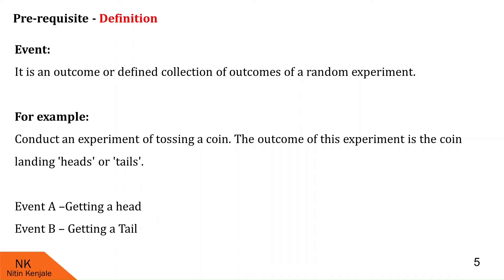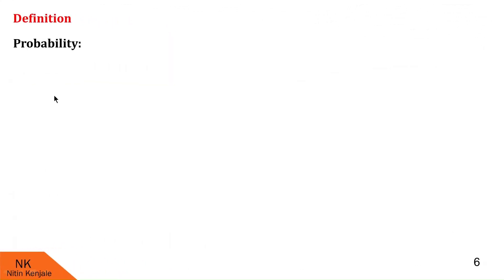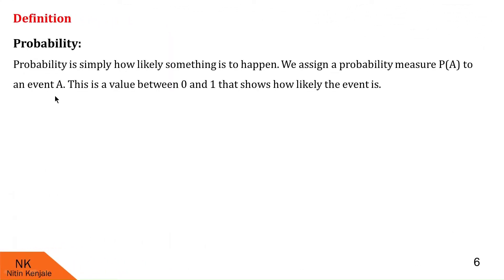Now using these terminologies, we are going to define probability. Probability is simply how likely something is to happen — it calculates the chances of something happening. We assign a probability measure P to any event A. This is a value between 0 and 1, showing how likely the event is. If P is closer to 0, there are less chances of event A happening; if P is closer to 1, there are more chances.